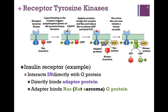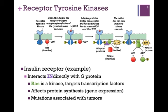This G-protein is referred to as RAS, which stands for rat sarcoma — that's how it was first identified. What happens with RAS? RAS is itself a kinase, meaning it phosphorylates a target. In this case, the targets are transcription factors, as illustrated on the far right. Active RAS phosphorylates and activates its target, and that affects protein synthesis — that is, gene expression. Mutations in RAS are associated with tumors because tumors are essentially uncontrolled cell growth, and those mutations often occur in RAS — which is actually how it got its name, rat sarcoma.